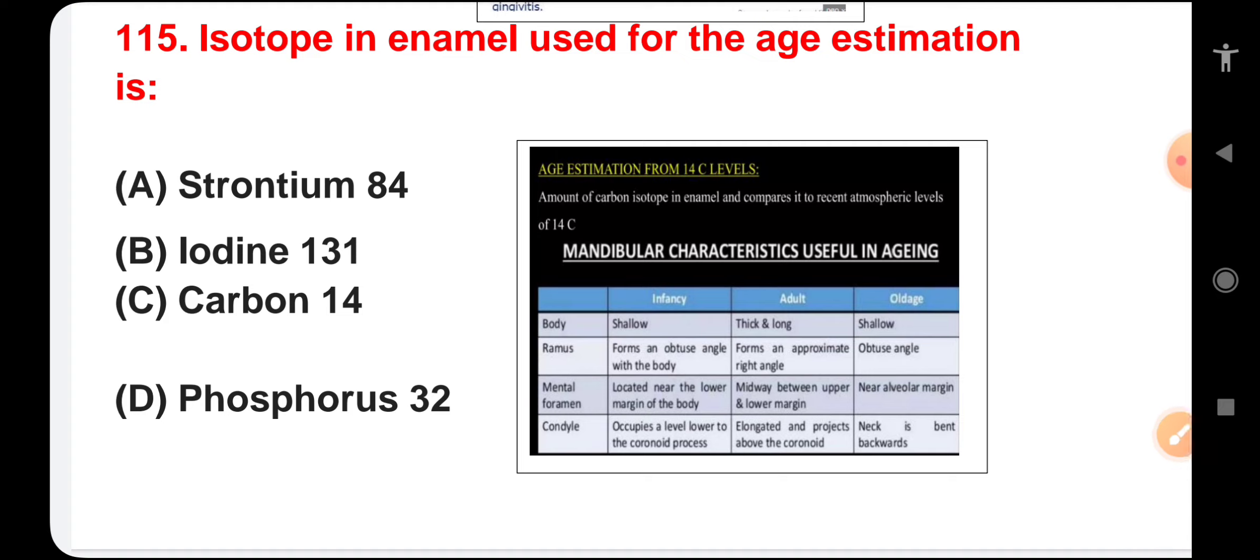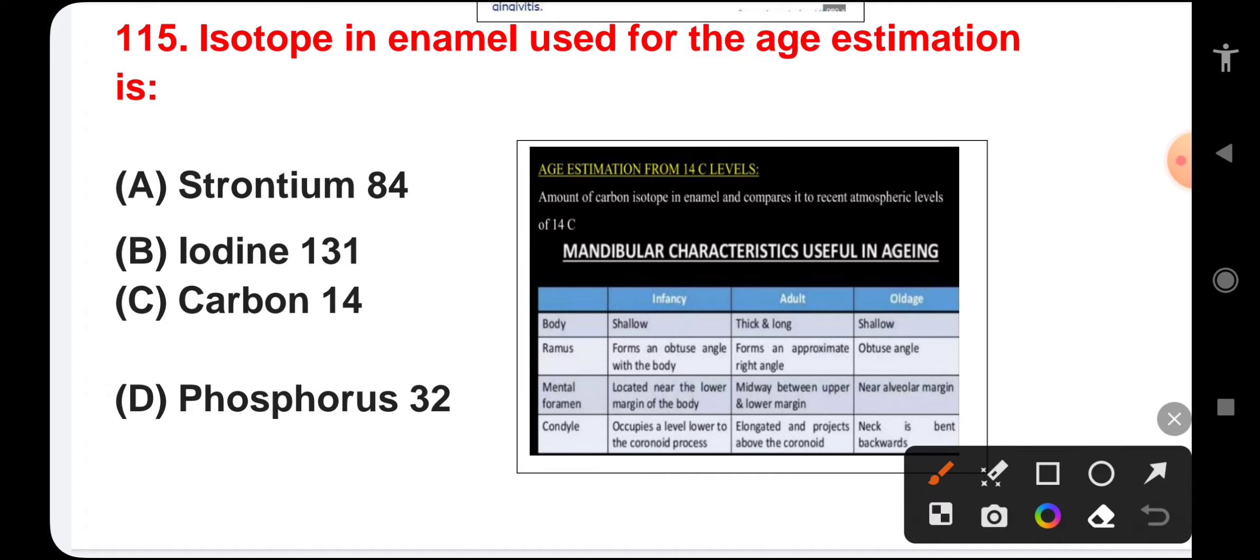Isotope in enamel used for age estimation is strontium-84, iodine-131, carbon-14, or phosphorus-32. The correct answer is carbon-14. Carbon-14 is used for age estimation. Mandibular characteristics useful in aging show body changes in infancy, adult, and older age including body, ramus, mental foramen, and condyle.